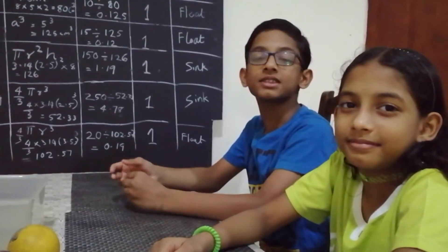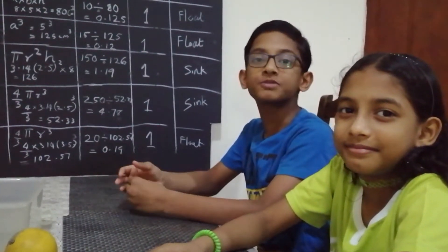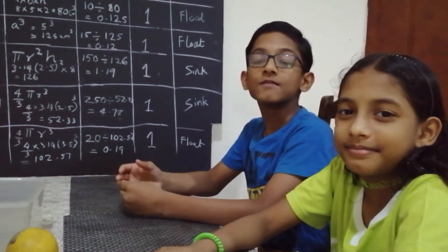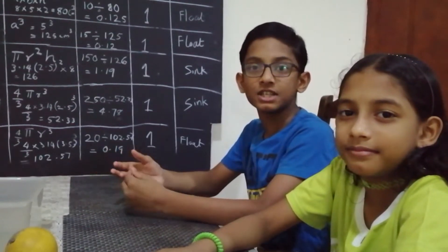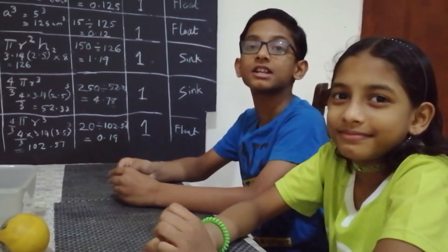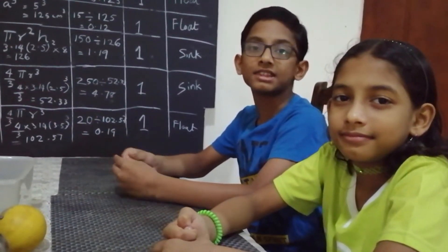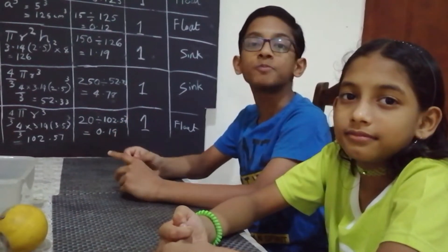When an object displaces amount of water equal to the weight of the object, the buoyant force will be equal to the gravity force in which the object will float. When the object is heavier than the water displaced, the buoyant force will be less than the gravity, so the object will sink.